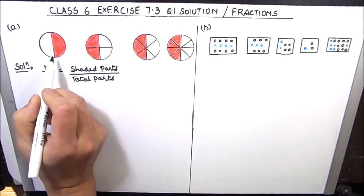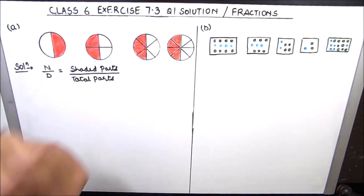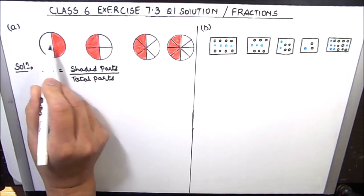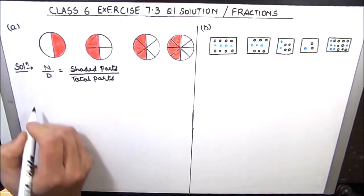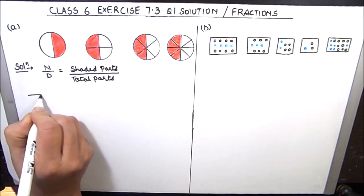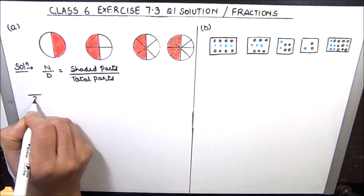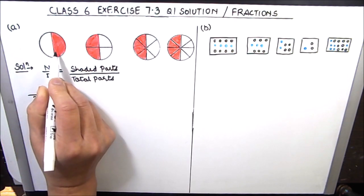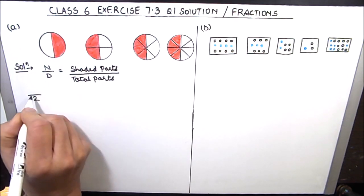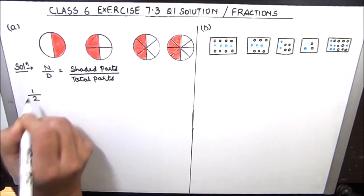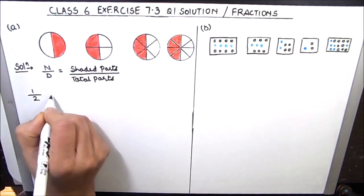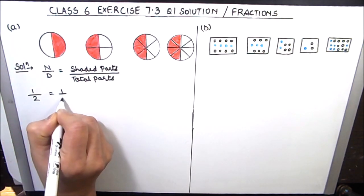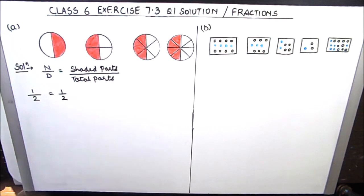In the first picture we have a circle divided into two parts. Total parts will be two and one part is shaded, so we are going to write one in the numerator. The fraction for the first circle is 1 by 2.